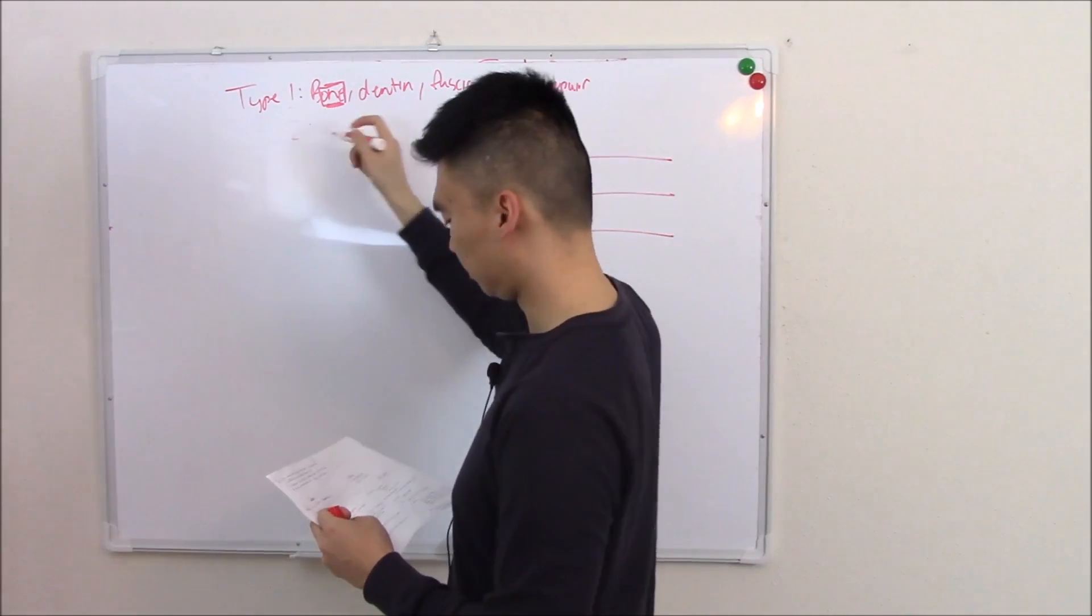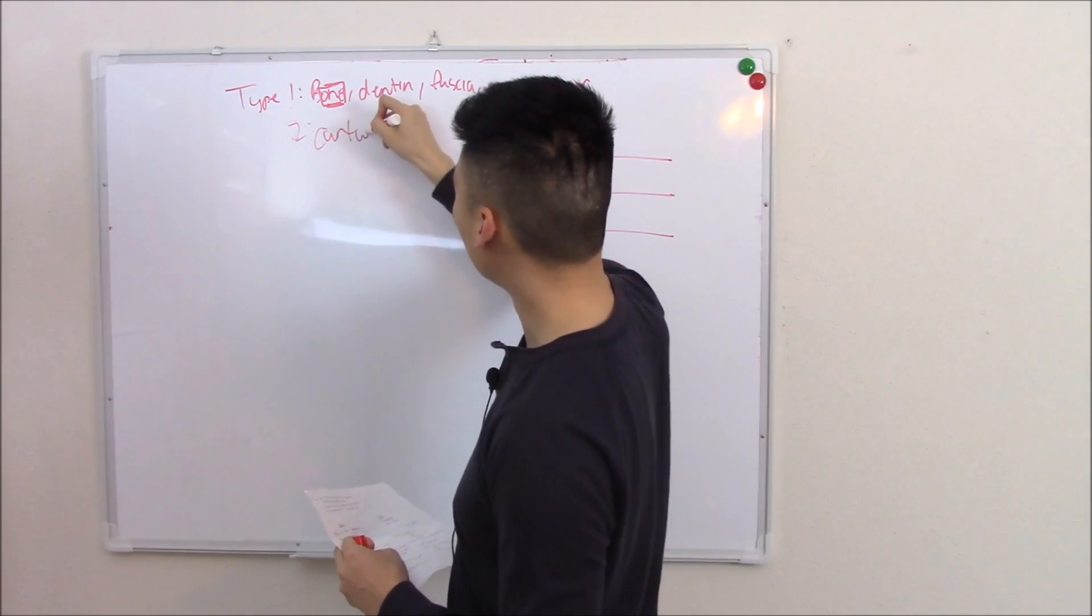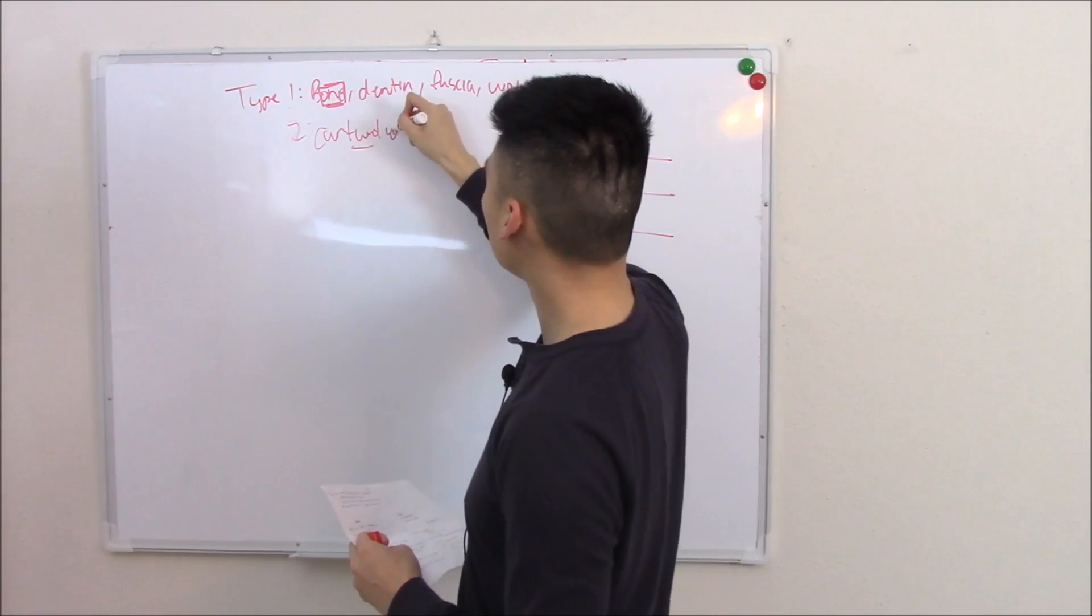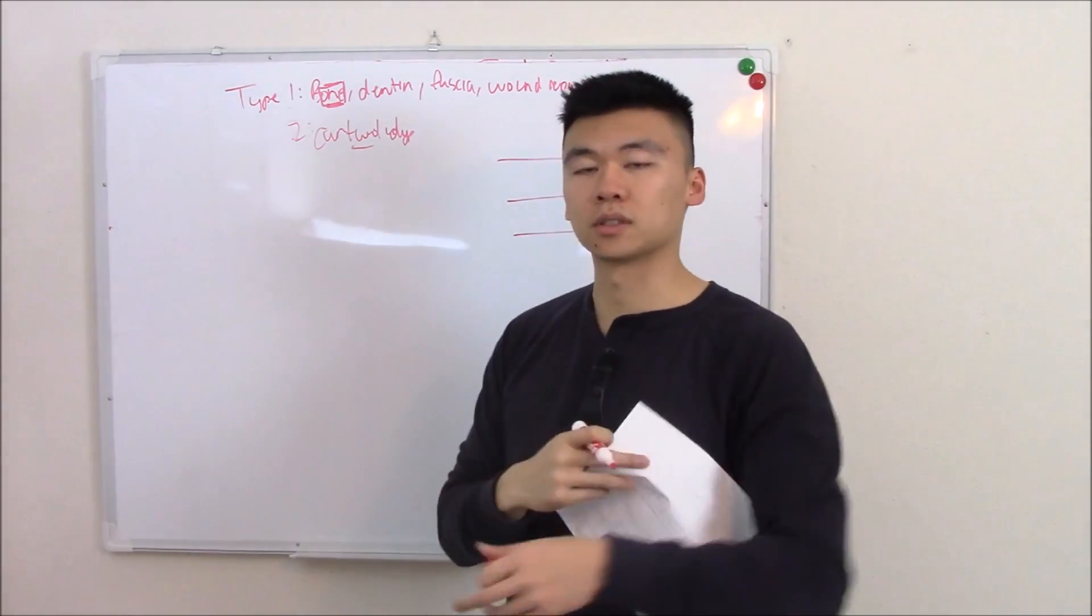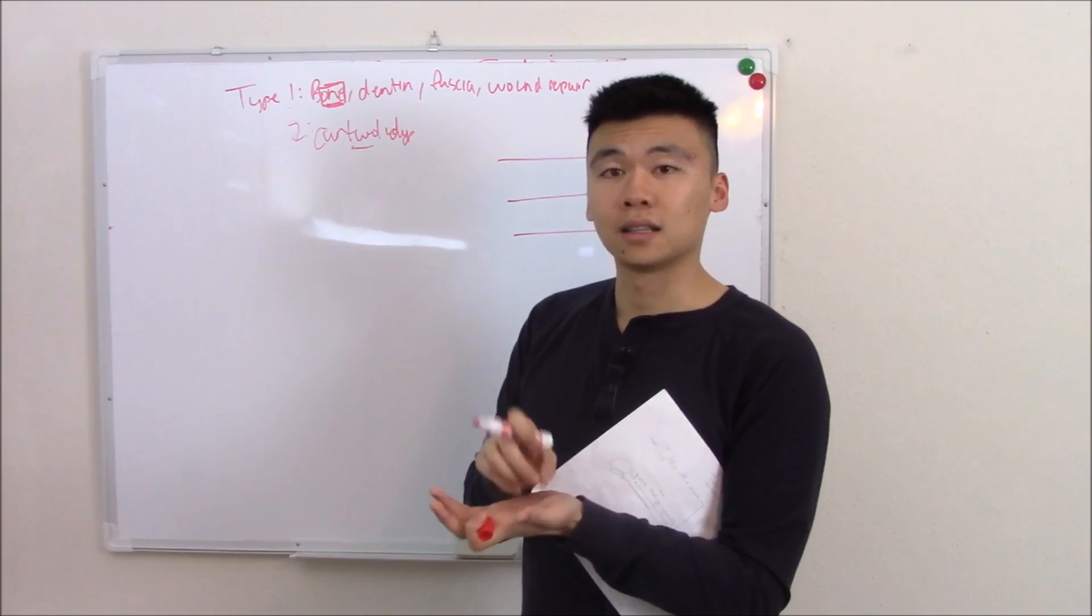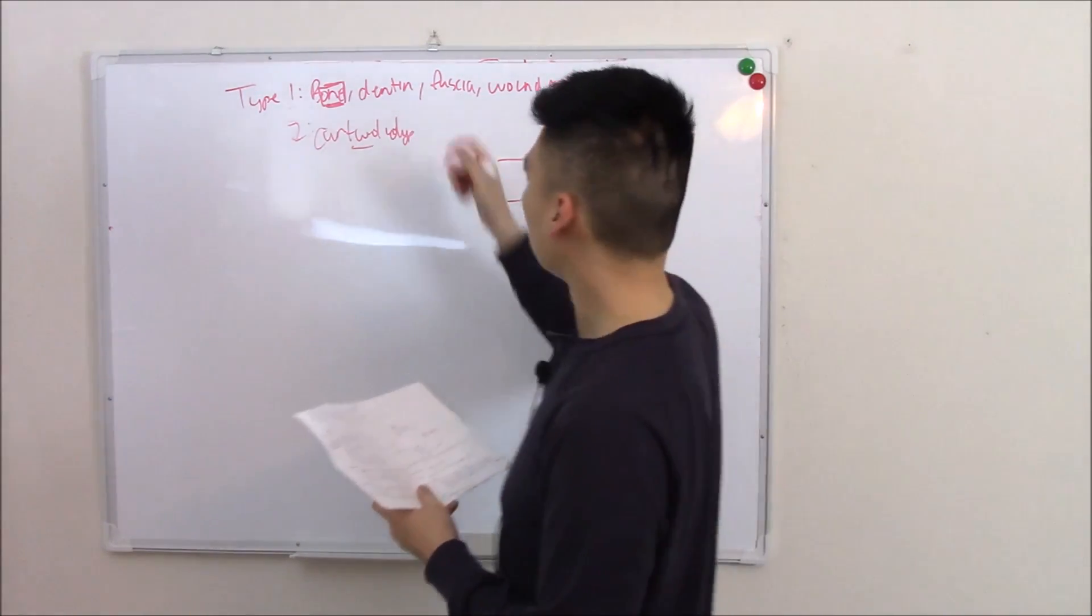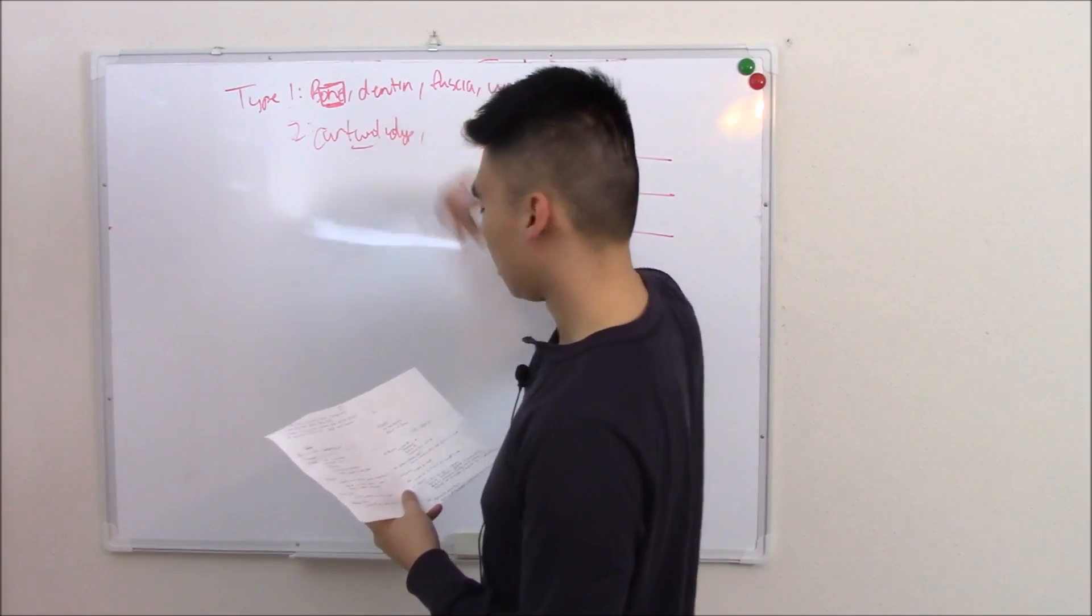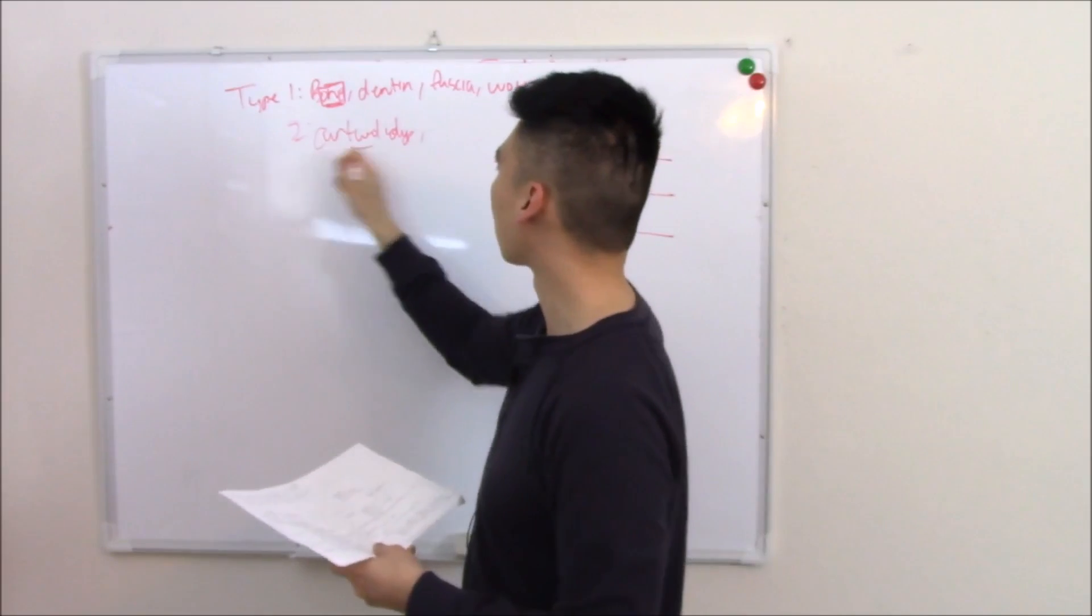Type 2, I like to call it cartilage because it's found in your cartilage. It's also found in your nucleus pulposus, that little shock pad in your spine. We'll talk about that during our neuro block, and your vitreous body of your eye. But by far the most important, cartilage.